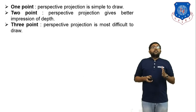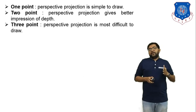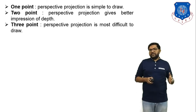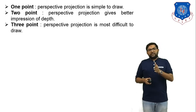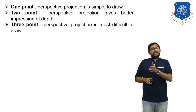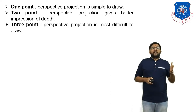In perspective projection there are a total of three types: one-point projection, two-point projection, and three-point projection. What is the difference between them?